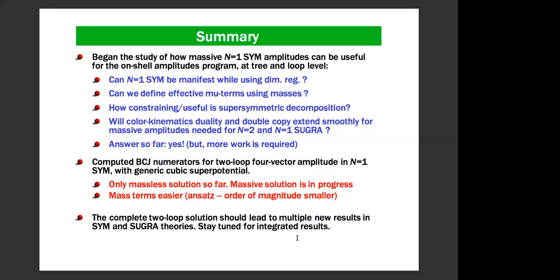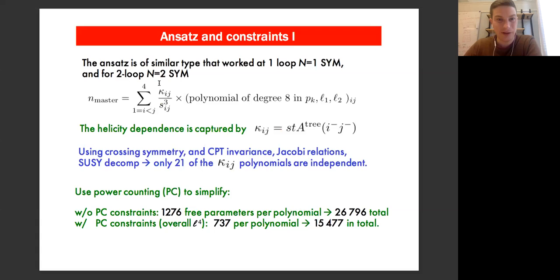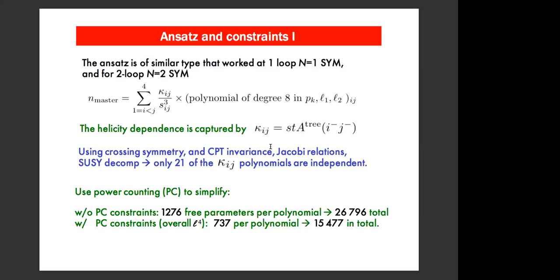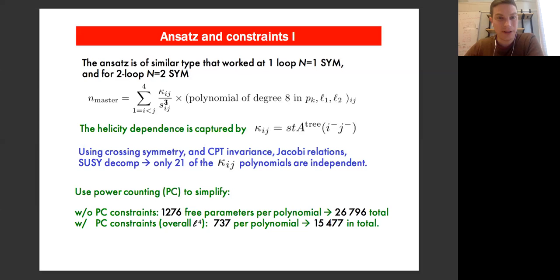Do you have an a priori understanding of how non-local you have to make the ansatz? At one loop, we carefully went through different possibilities and found the minimal non-locality. It always turns out to be four minus the number of supersymmetries. For example, if you have four supersymmetries, the denominator is just one. For two supersymmetries, the denominator has two powers. For QCD, the denominator has four powers. So it's pretty logical.